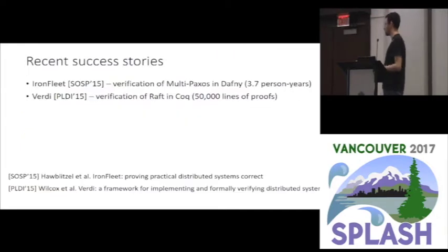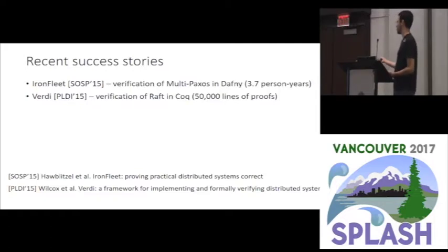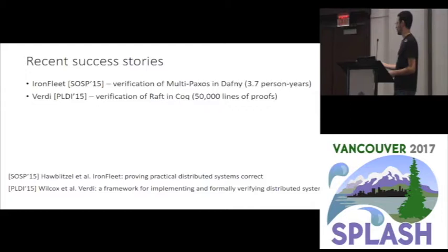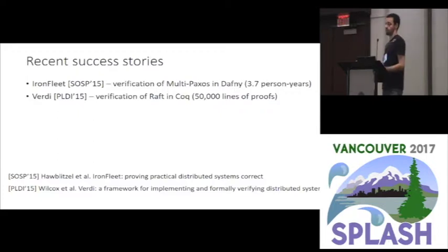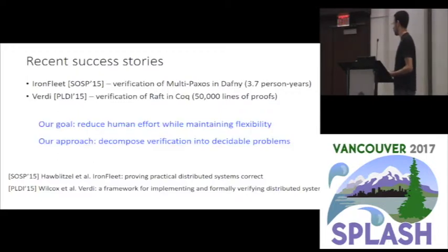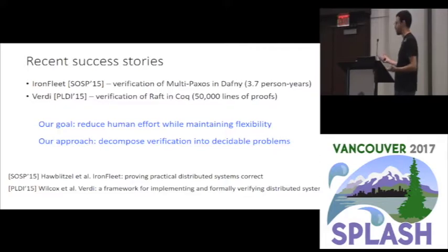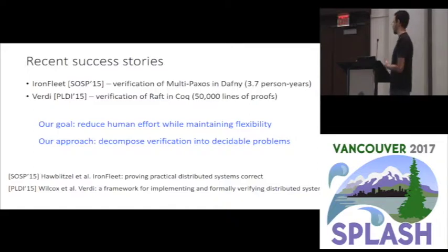There has also been some recent success stories from the verification community to verify Paxos and variants of Paxos. Two examples are IronFleet and Verdi. IronFleet verified an implementation of multi-Paxos in Daphne, and Verdi verified an implementation of Raft in Coq. What's nice about these works is that they actually succeeded in verifying a real-world system. What feels like there is still room for improvement is the great effort that was required to achieve this. Our overall goal with this line of work is to reduce the human effort needed to verify distributed protocols, but maintain the flexibility, richness, and complexity of the systems and properties that we can verify.